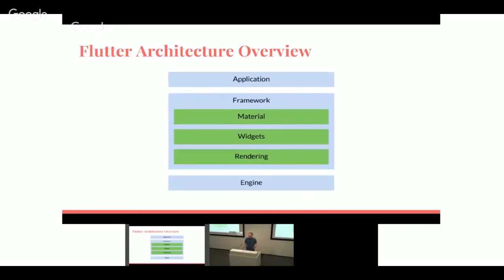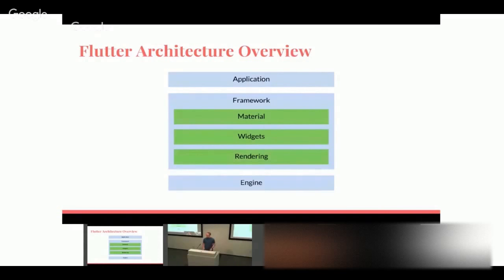To orient ourselves, this is a sketch of the overall architecture of Flutter. At the bottom there's an engine that exposes a very low-level API. The engine is very smart about text and knows how to take vector graphics and draw them onto the screen. Above that is the framework, which is itself composed of several layers. This talk is about one of the lower levels in the framework called the rendering layer, which is responsible for organizing the screen — allocating space for various widgets and making those widgets appear on screen. Above the framework is where you write your application.